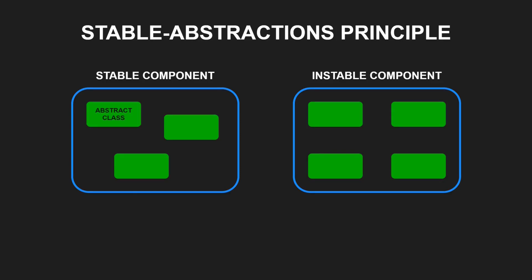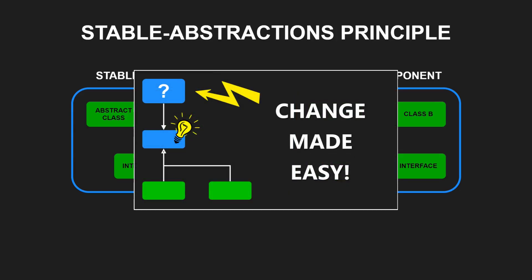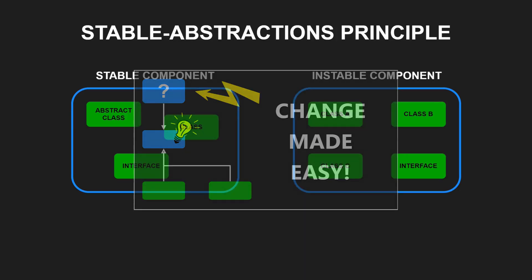This means stable components should also be abstract so that they can still be extended despite their stability. On the other hand, instable components should be concrete as its instability allows its code to be changed easily. Following the stable abstractions principle, stable components do not cause inflexible designs, as such components contain classes that follow the open-closed principle and so remain extensible and flexible.